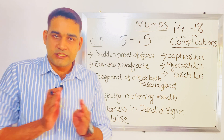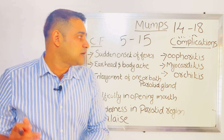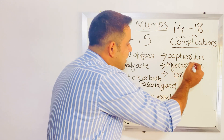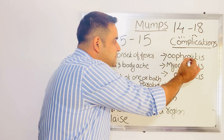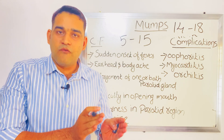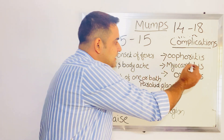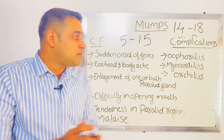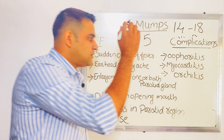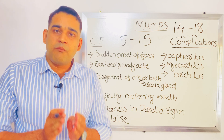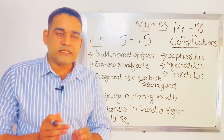Regarding the complications of mumps: the first is oophoritis — inflammation of one or both ovaries. The second is myocarditis — inflammation of the myocardium, the muscle layer of the heart. The third is orchitis — inflammation of one or both testicles. These are the main complications of mumps.